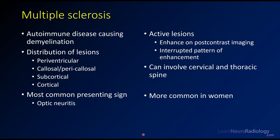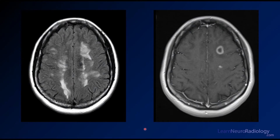This is what multiple sclerosis looks like. Multiple sclerosis is an autoimmune demyelinating disease. You tend to get lesions that are periventricular, in the corpus callosum or pericallosal regions. You have subcortical and cortical lesions. The most common presentation is optic neuritis or visual changes. Active lesions tend to enhance on post-contrast imaging — those enhancing lesions are active lesions with an active inflammatory component. They can involve the cervical and thoracic spine, and MS is more common in women than in men.